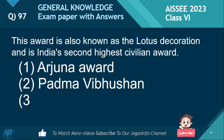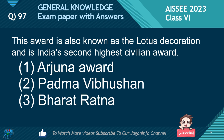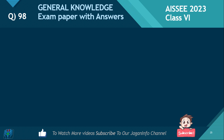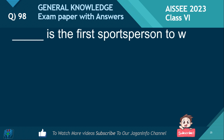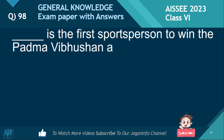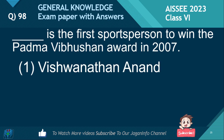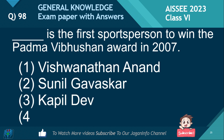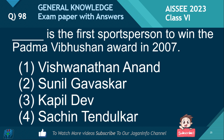Who was the first sports person to win the Padma Vibhushan award in 2007? Options: Viswanathan Anand, Sunil Gavaskar, Kapil Dev, Sachin Tendulkar. If you like this video, please don't forget to subscribe our channel. The answer is Viswanathan Anand.